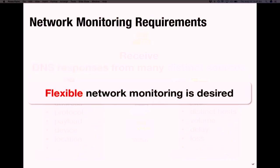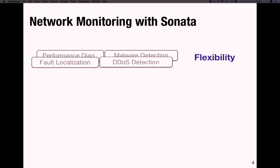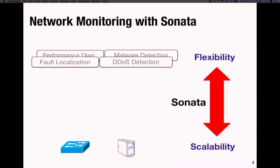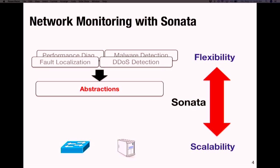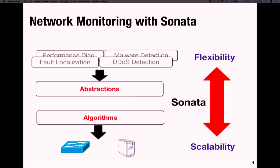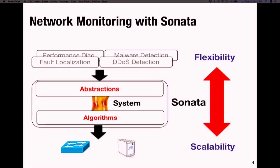We need to understand that the amount of storage and compute resources available for network monitoring systems is limited, and this creates a gap between desired flexibility and scalability. In today's talk I will present Sonata, a system that tries to bridge this gap. More concretely, I'll be talking about the abstractions that make it possible for network operators to express a wide range of network monitoring tasks, the algorithms that make best use of limited storage and compute resources, and the system that glues the high-level abstractions with the low-level algorithms.